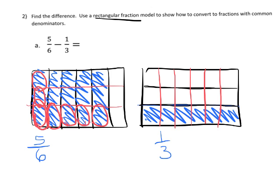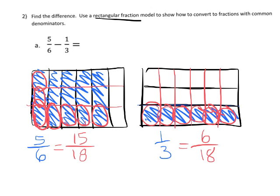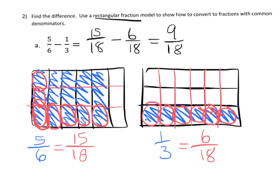So five sixths becomes — one, two, three rows, and one, two, three, four, five columns — three times five is fifteen, so that becomes fifteen eighteenths. Then our one third becomes six eighteenths. So we end up with fifteen eighteenths minus six eighteenths, which gives us nine eighteenths, and nine eighteenths is one half.